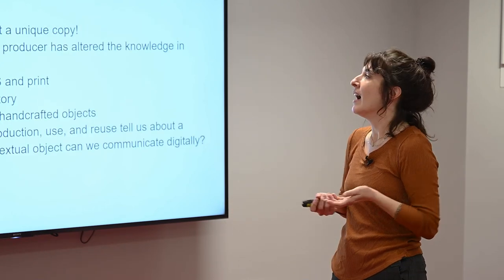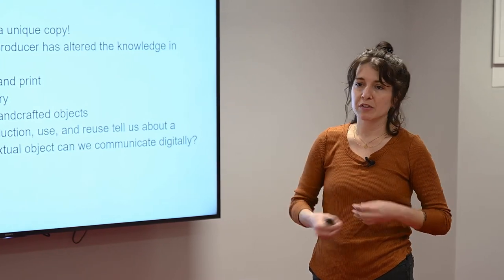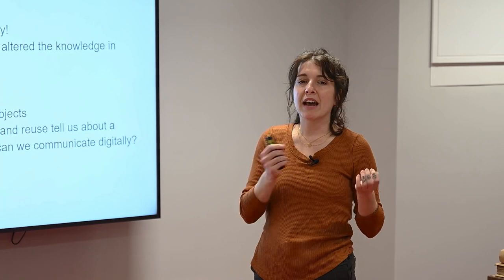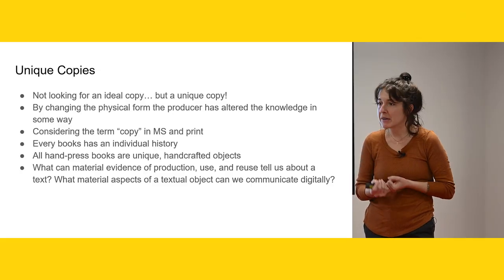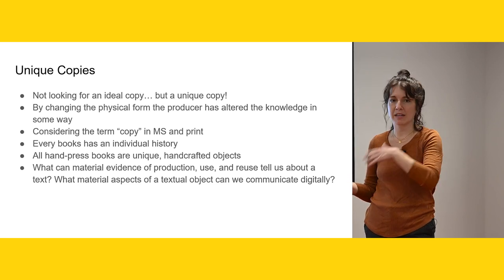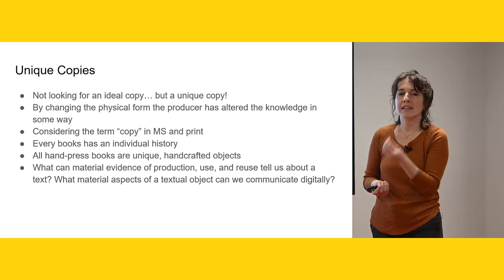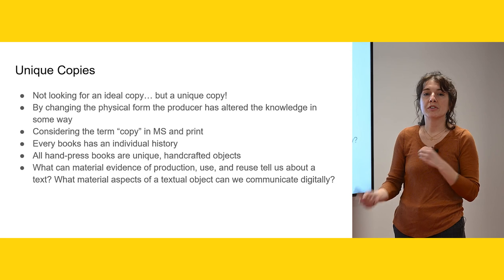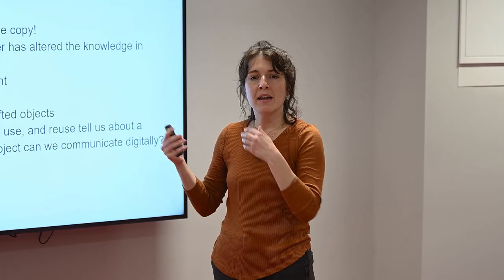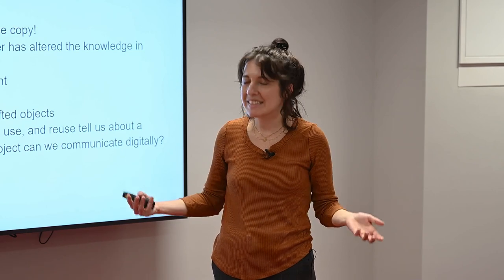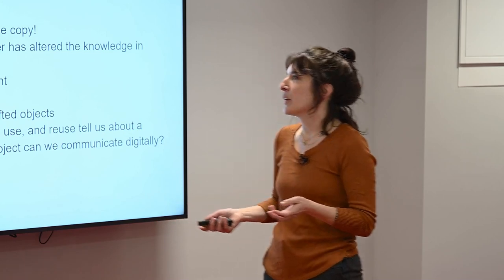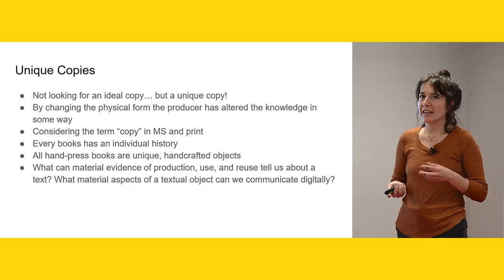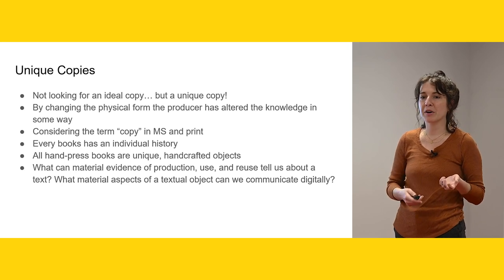I want to talk about unique copies. The producer — or many producers — of a text change or create the physical form when they produce it. Every time a text has a new edition, is copied in manuscript form, made from manuscript to print and back again, the knowledge contained inside changes. Whether intentional or not, anyone involved in textual production alters the knowledge in some way — whether an error or adding something they think is important, or annotating it differently from previous copies. That's why we need to discuss production to understand how books were used and reused.